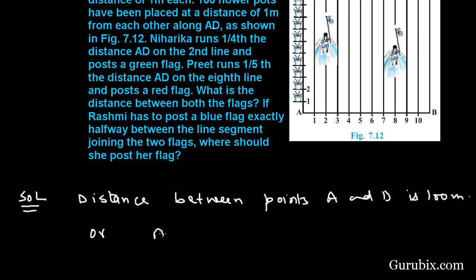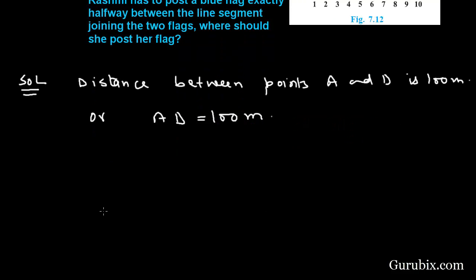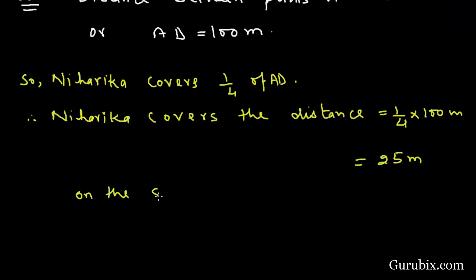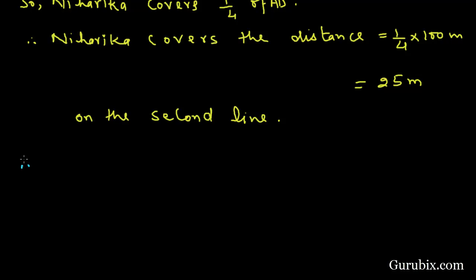We are given that Niharika covers 1/4th of AD. So Niharika covers the distance 1/4th of AD, which means 1/4 × 100 = 25 meters on the second line. Therefore, the position of green flag is (2, 25), and let us denote this point by P.